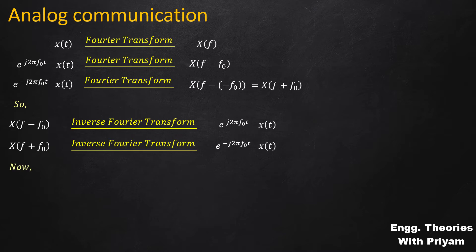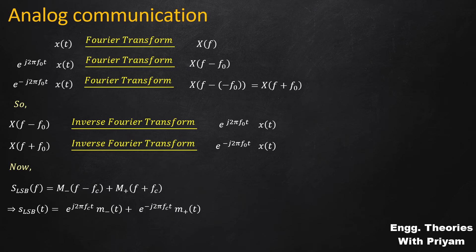Now the lower sideband SSBSC modulated signal in the frequency domain is given by capital M-(F - Fc) + capital M+(F + Fc). Applying the inverse Fourier transform, the lower sideband SSBSC modulated signal in the time domain equals e^(j2πFct)·M-(t) + e^(-j2πFct)·M+(t).